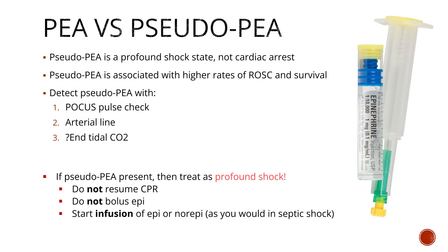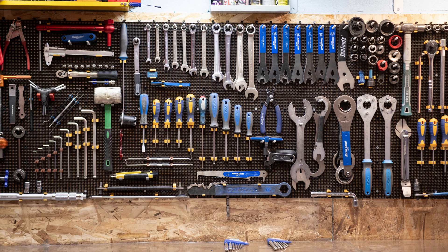This is from the REASON trial — when they retrospectively reviewed the data, they found that continuous IV adrenergic agents had higher rates of ROSC. I was planning to do a whole lecture on pseudo-PEA versus true PEA until I came across a video that explains it way better than I ever could, so if you're interested please check out the link to a video by Dr. Rob Samard.